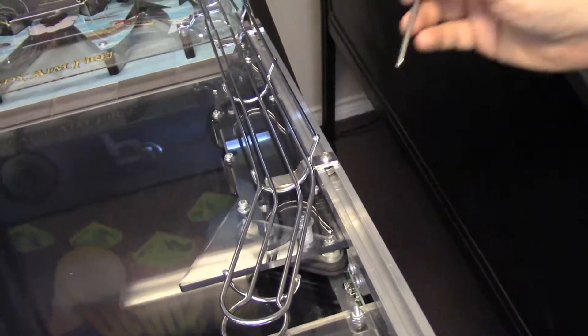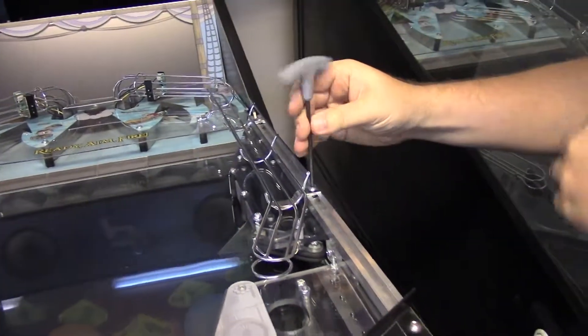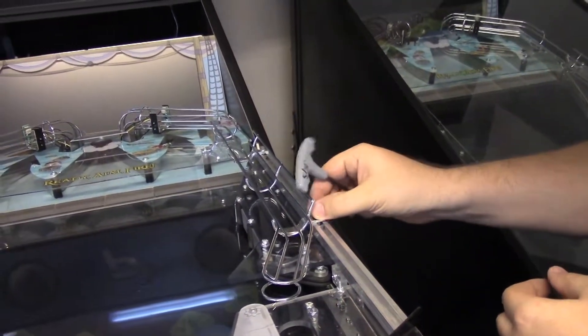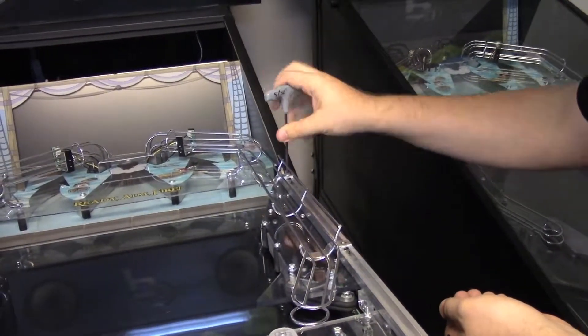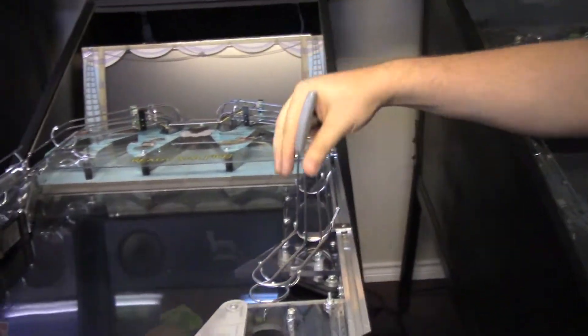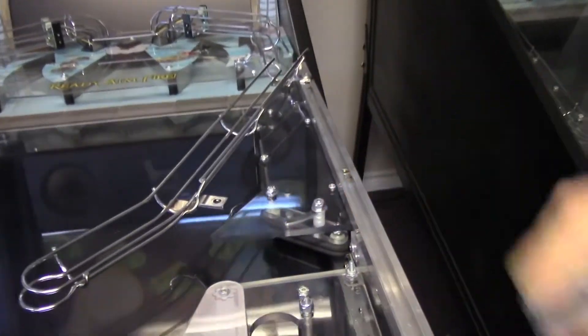And with a 5-32 inch Allen wrench, I'm going to completely take the screw out. I'm just going to loosen the back screw. That will allow me to pivot the wire form out of the way, which will give me access to that nut.